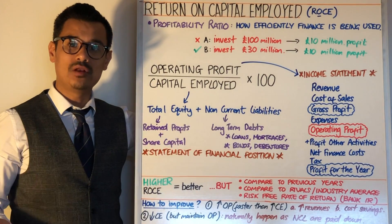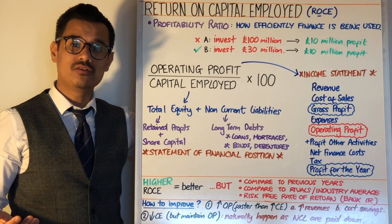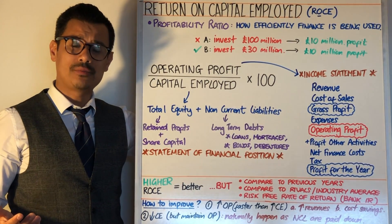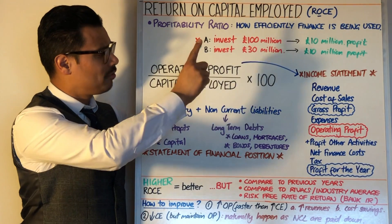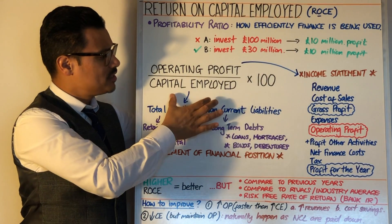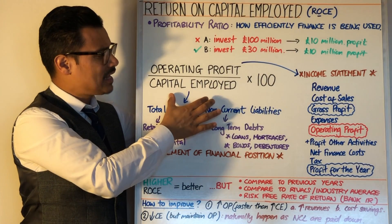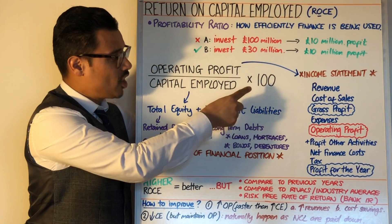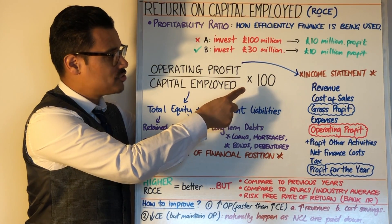Now there's a formula for ROCE — return on capital employed — and that is: operating profit divided by capital employed, times by 100.